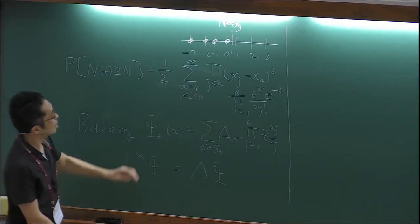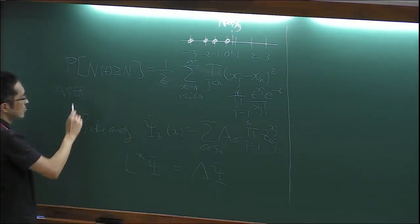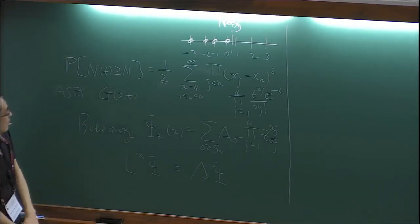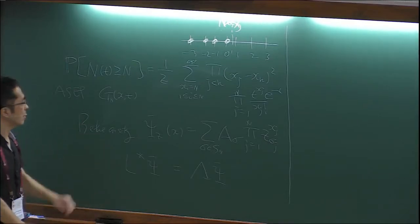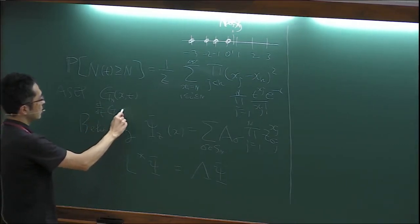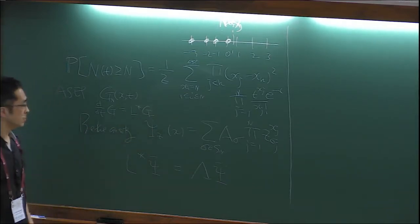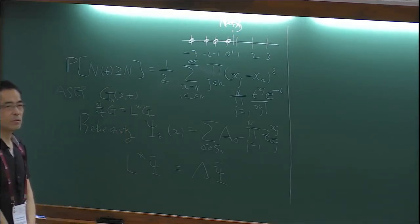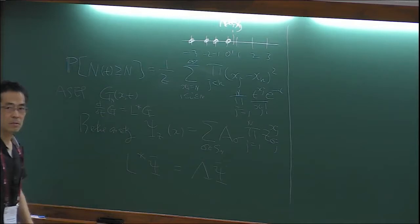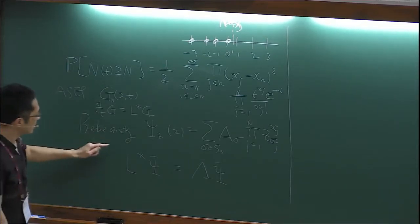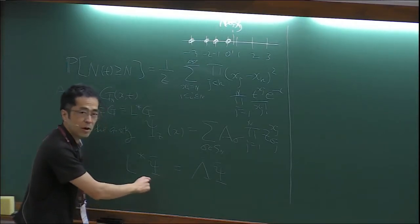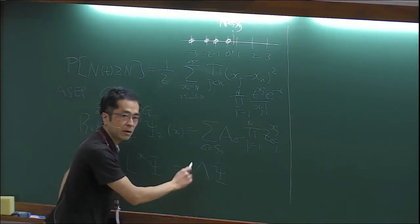For general ASEP, we consider the transition probability, denoted as G_x or G_{x,t}. We may put a subscript n, since we are considering the n-particle sector. The time evolution equation can be written as a linear equation, where L* is related to the generator of the Markov process, and this can be represented as a matrix. Instead of considering this time-dependent differential equation, we now consider the eigenvalue problem for this generator L*. We want to find some function or eigenvector psi which satisfies this relation, where lambda is the eigenvalue.